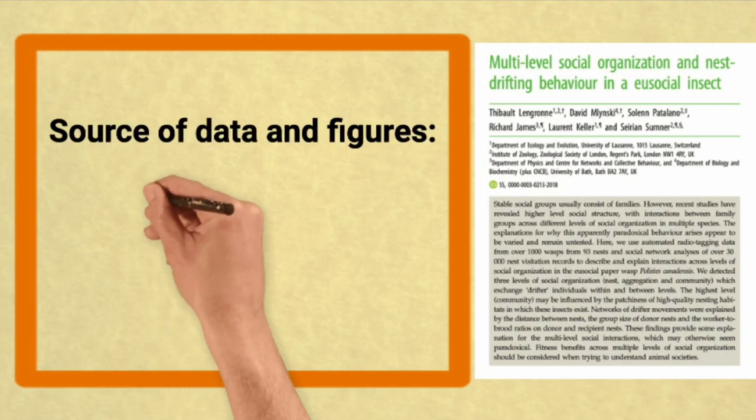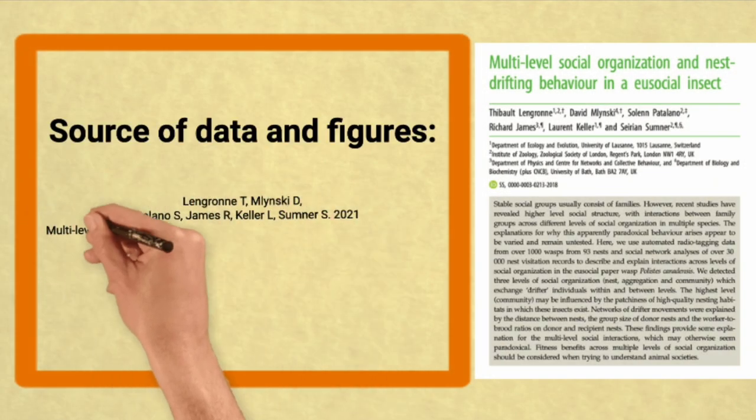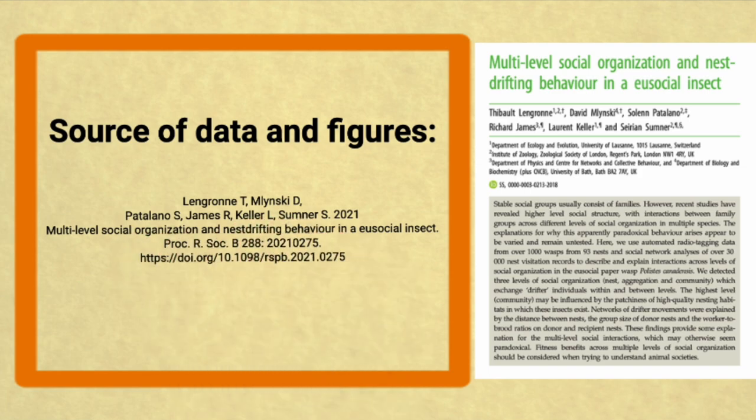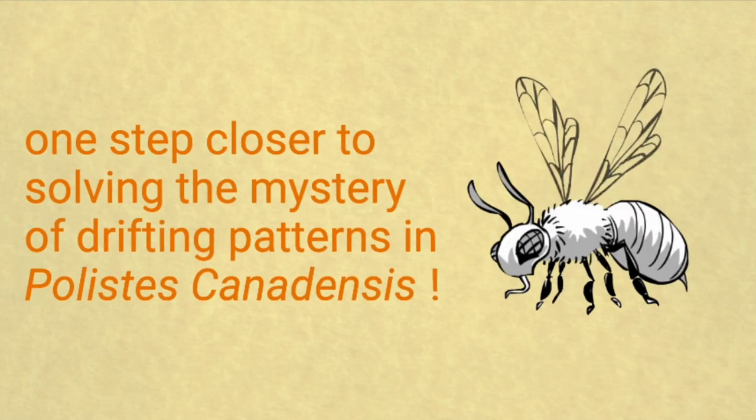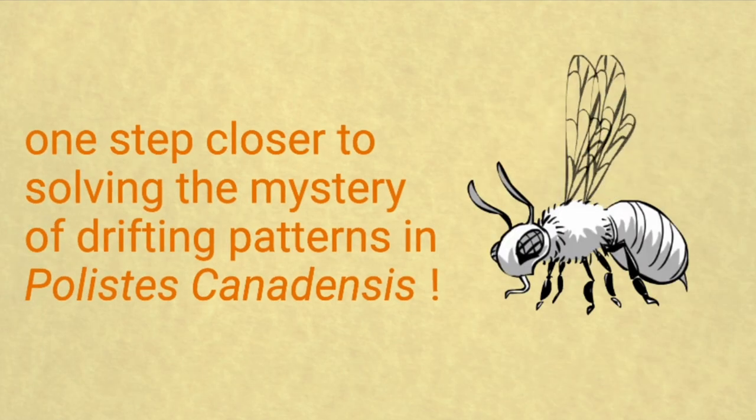Our understanding used to be based on small-scale studies that were at best correlational in nature. Without these new findings, it would have been hard to figure out why this drifting behavior occurs and how important it is for their society to function well. This research paper provides the most comprehensive analysis to date of inter-nest drifting in a social insect, and shows how amazing these underappreciated insects are.